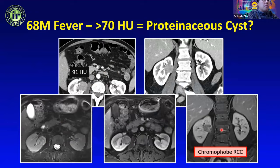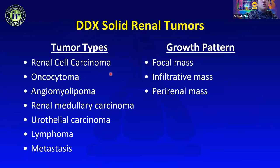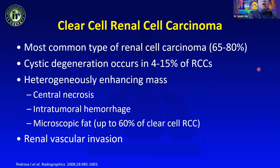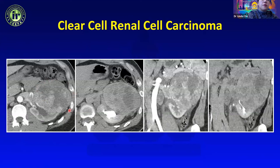When thinking about solid renal tumors, the differential includes renal cell carcinoma, oncocytoma, angiomyolipoma, renal medullary carcinoma, urothelial carcinoma, lymphoma, and metastases. Growth pattern and tissue characteristics help determine tumor type. Clear cell RCC is the most common subtype; cystic degeneration can occur in up to 15 percent. Clear cell tumors are heterogeneously enhancing masses with heterogeneity due to central necrosis, internal hemorrhage, and microscopic fat, and may demonstrate renal vascular invasion.